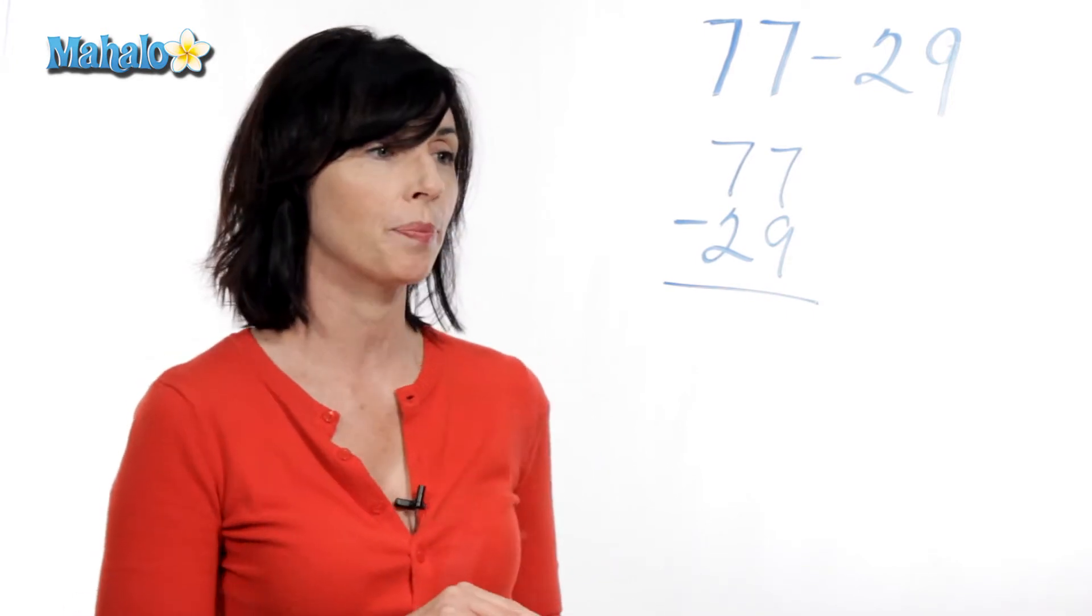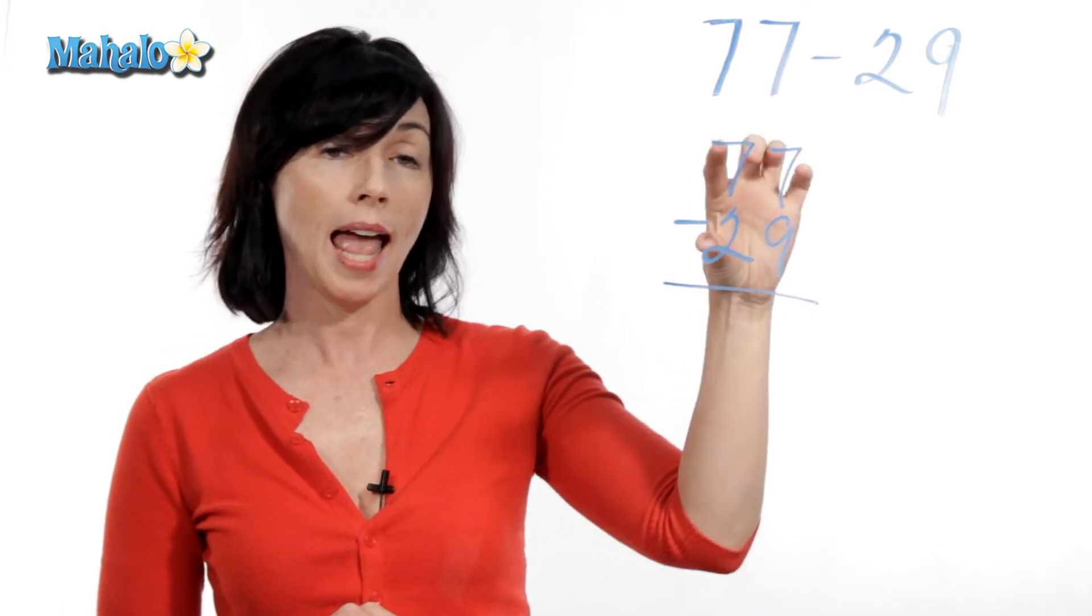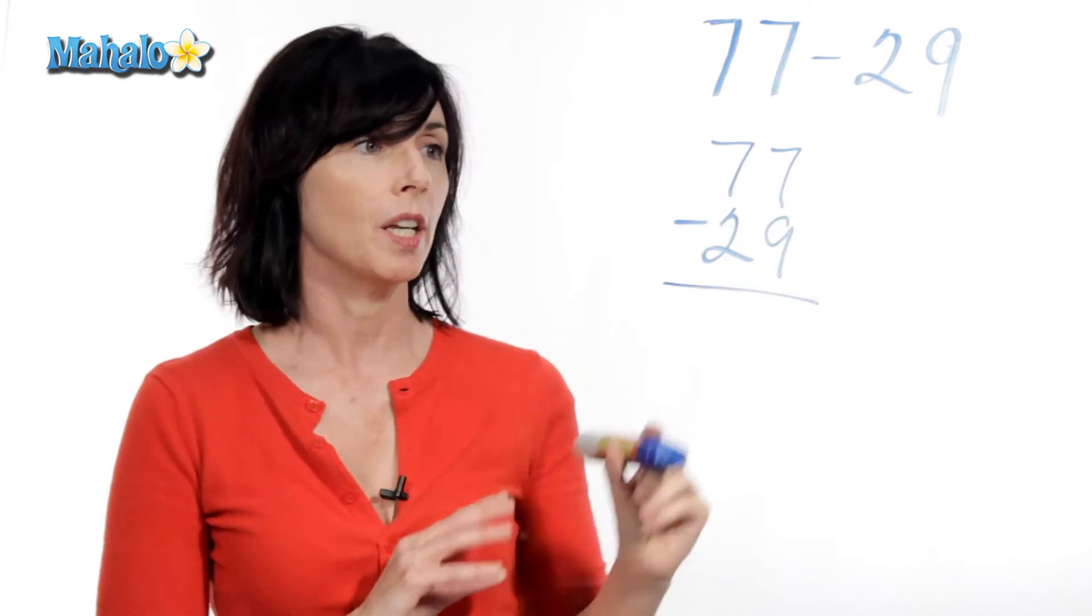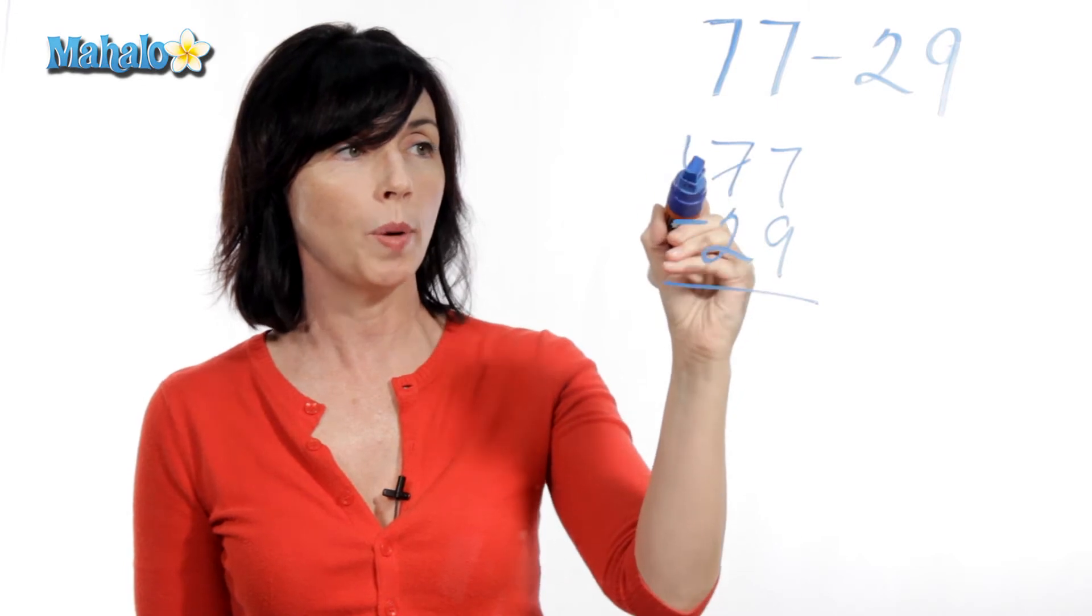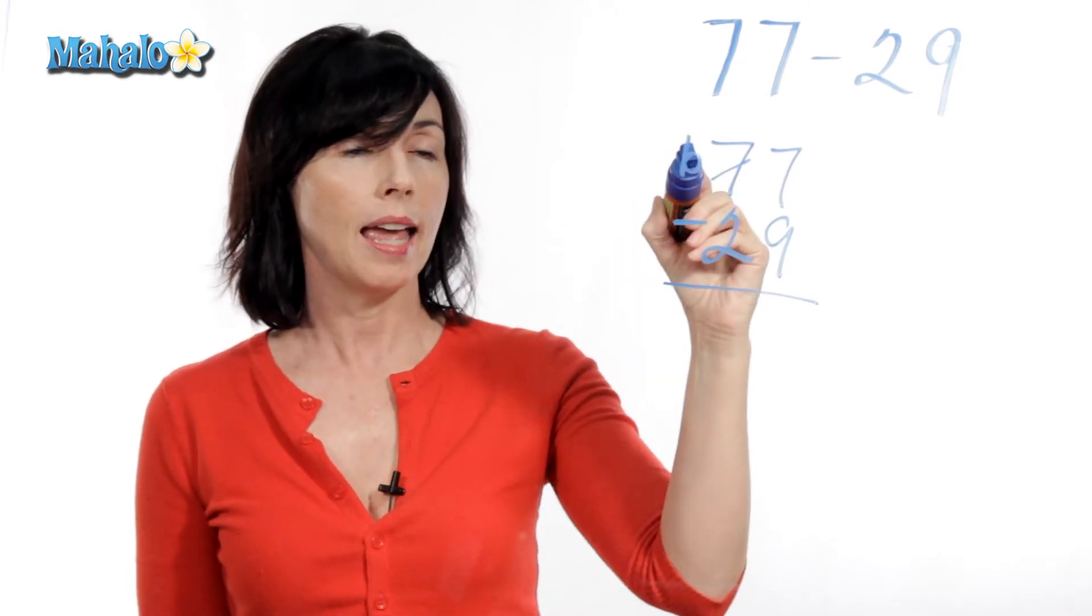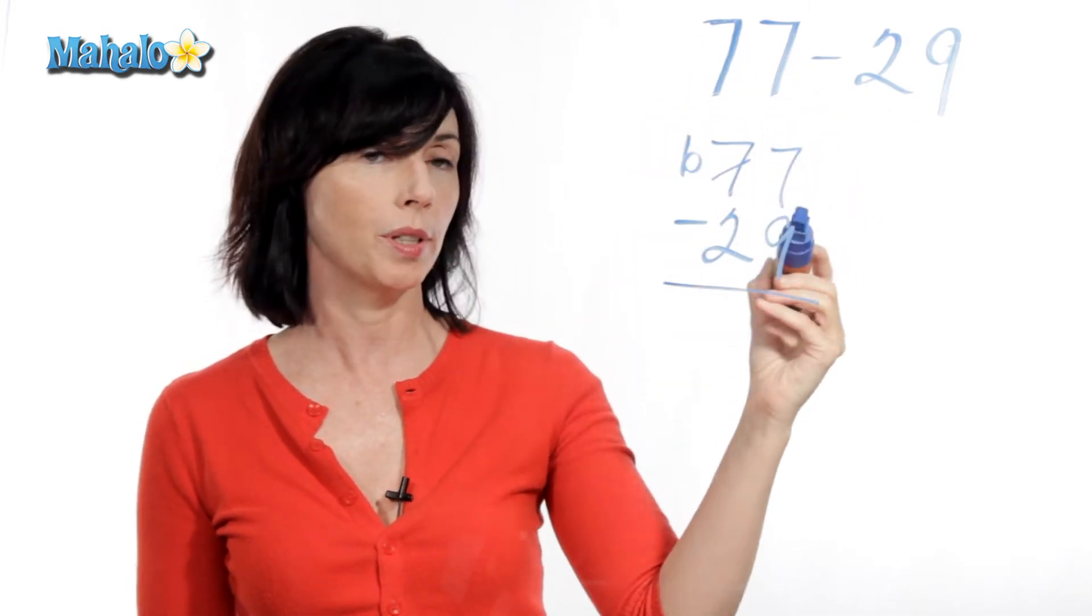So here's how that works. I'm going to actually borrow 10 from my tens column and put it over here. So instead of seven, I'm going to take one away from that and call it six. And then I'm going to borrow 10 and put it in the ones column.